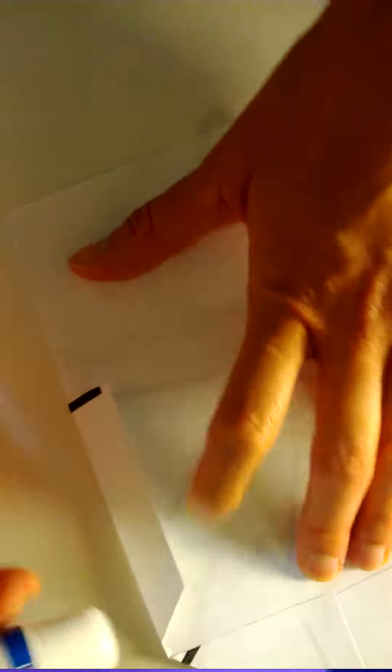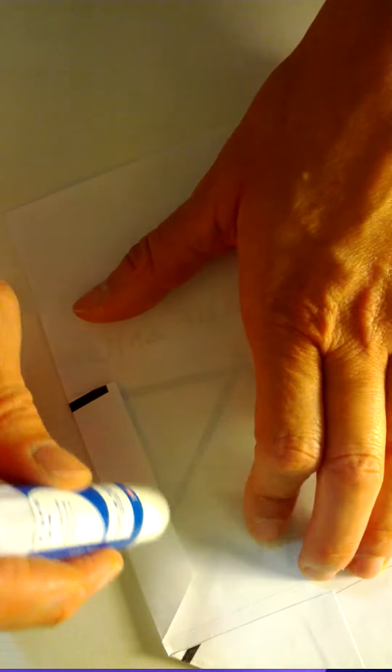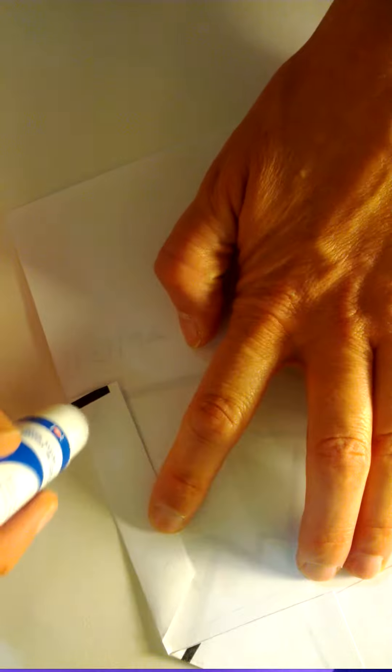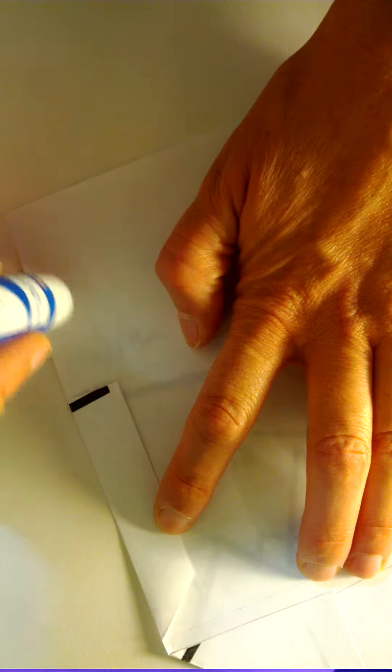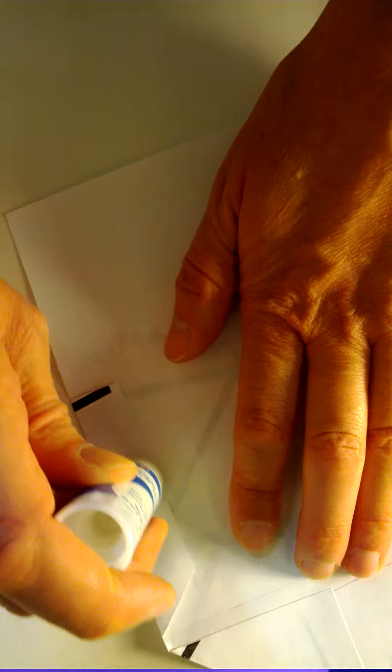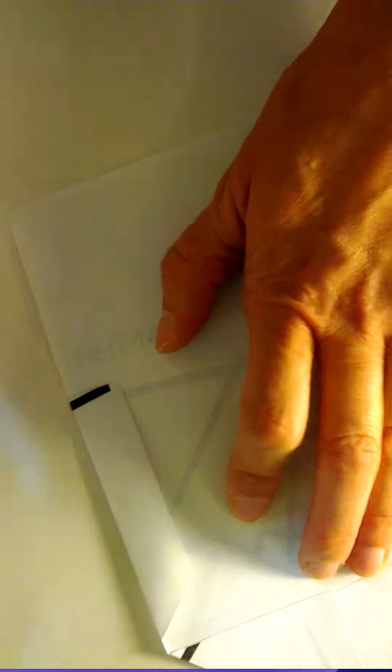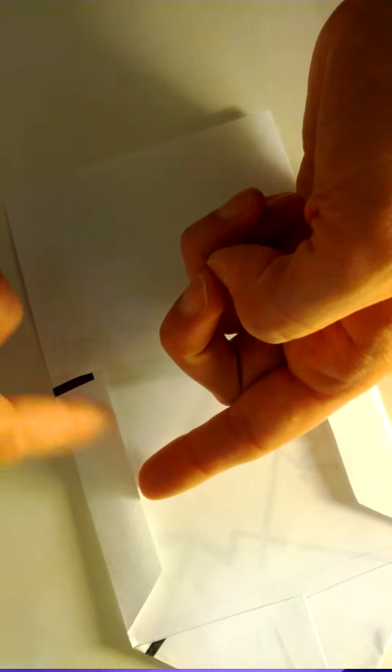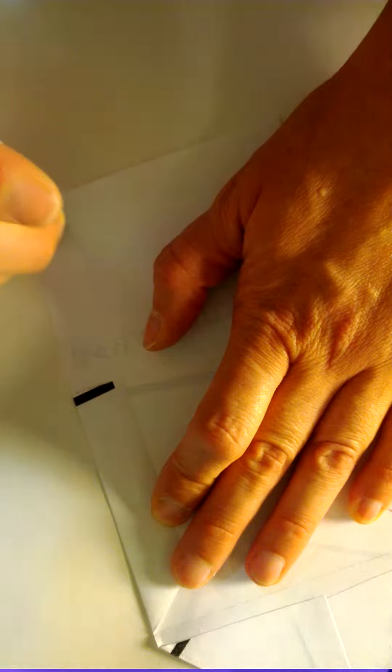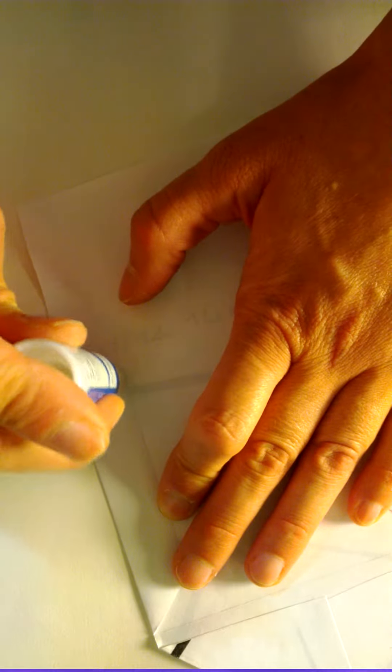Now you're going to take the glue stick and you're going to run down like that. And then start in this corner and run down like that. So you want to make sure the glue stick stays on this flap and doesn't go over here, because then your envelope will stick closed, and then that'll be a problem.